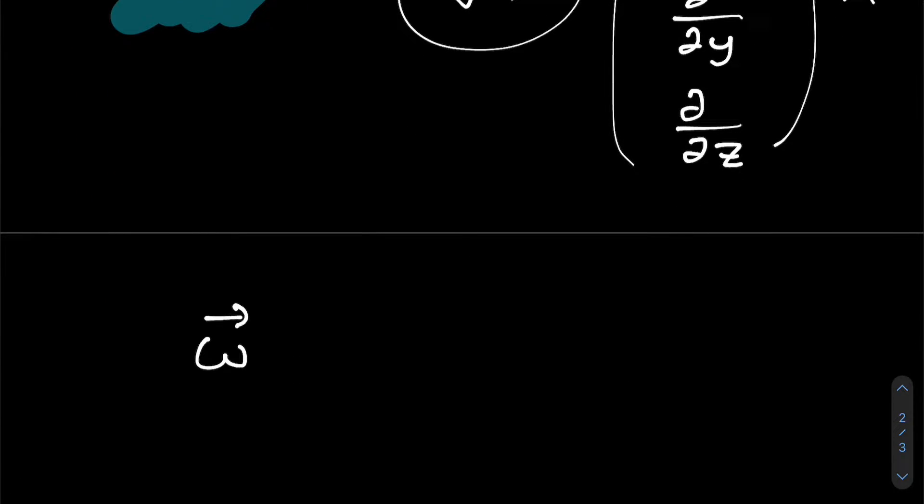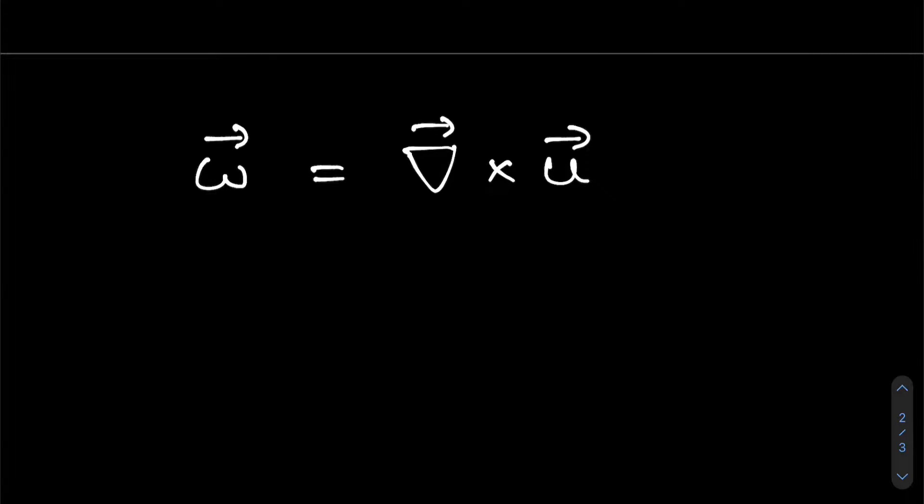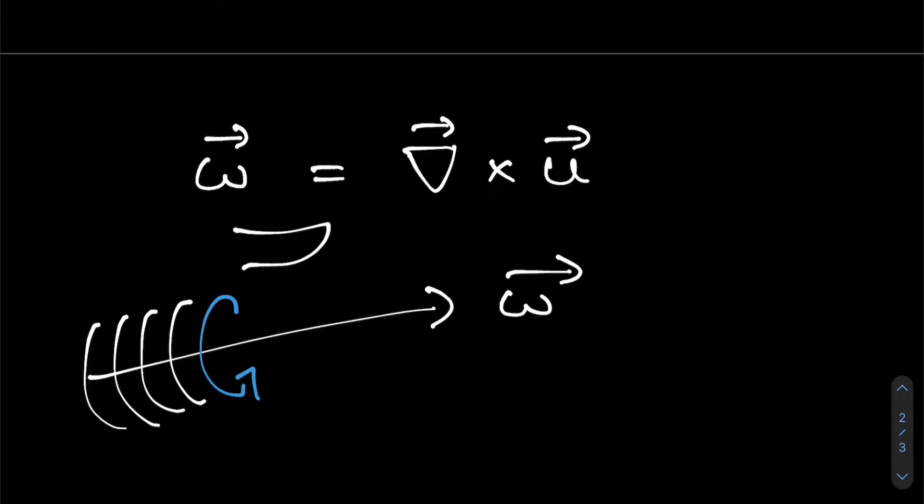And this makes sense because curl is the measure of the spinniness of a vector field. So our vorticity, omega, is defined to be the curl of our fluid velocity, u. And as a brief reminder, we can use the right-hand rule to determine what way our vorticity vector will point in. If our fluid spins in this direction, that's the direction we want to curl the fingers of our right hand in, such that the thumb of our right hand will point in the direction of omega, our vorticity.